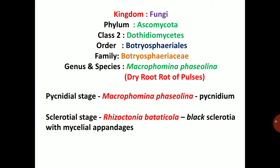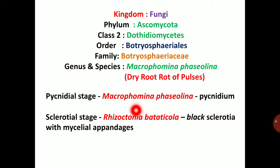We will talk about the pathogen's asexual reproduction and sexual reproduction — two types of pathogen stages. The pycnidial stage and sclerotial stage are the two types. The pycnidial stage is the asexual stage and the sclerotial stage is the resting stage. The resting stage allows the pathogen to tolerate unfavorable conditions.